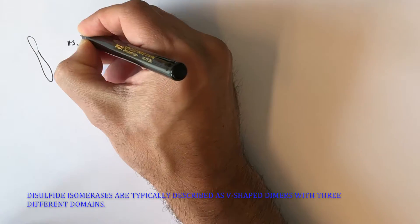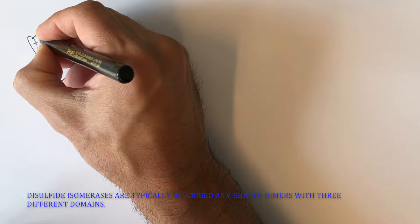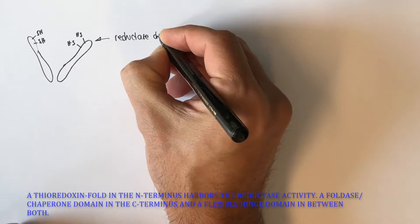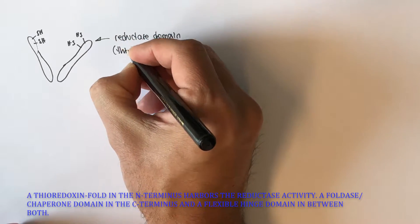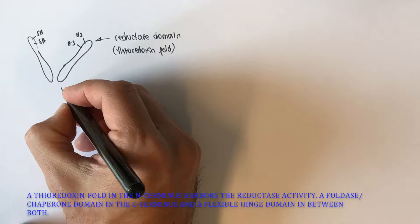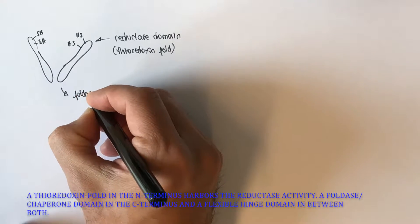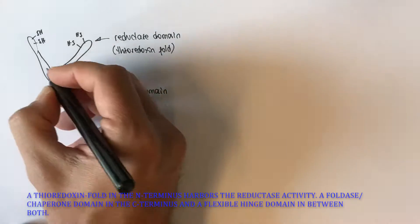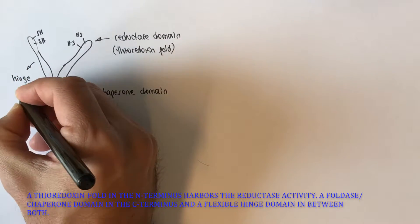Disulfide isomerases are generally described as V-shaped dimers. They possess three different domains: an N-terminus domain with a thioredoxin fold type that is responsible for the reductase activity, a foldase or chaperone domain in the C-terminus and interface of the monomers, and a flexible hinge domain in between both of them.